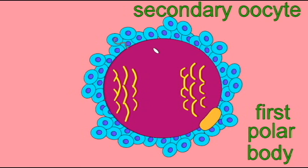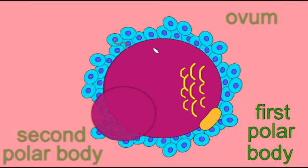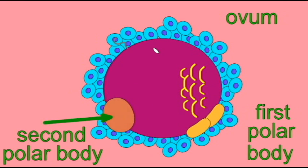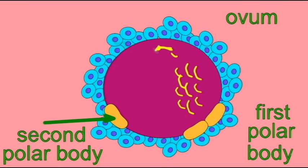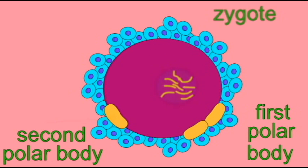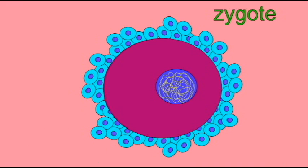Female gametogenesis does not produce four functional gametes as in males, but rather one functional ovum and then two or three polar bodies, here depicted in yellow. These cells will not take part in reproduction.